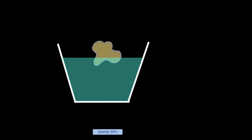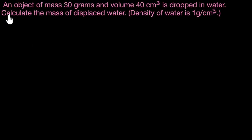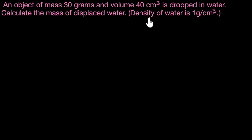Let's solve a couple of problems to see how to calculate the amount of liquid displaced when something is floating on top of it and when something sinks into it. Here's the first one: an object of mass 30 grams and volume 40 cm cubed is dropped in water. Calculate the mass of displaced water, given the density of water is one gram per cm cubed.